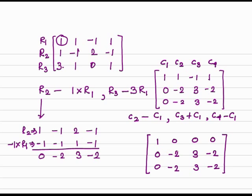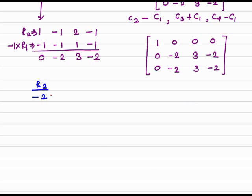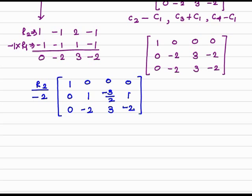The second step is to make the next pivot entry a leading one. We apply the row operation R2 divided by minus 2. This gives the matrix: 1, 0, 0, 0 / 0, 1, minus 3/2, 1 / 0, minus 2, 3, minus 2.